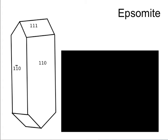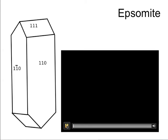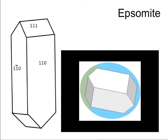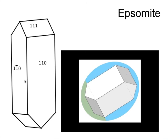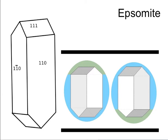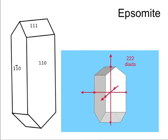Now we go to epsomite. The angle between adjacent faces is not 90 degrees. Looking at the shape, I rotate it about an axis normal to one edge and I recover exactly the same shape after 180 degrees - green was on top, green is at the bottom now. So there is a twofold rotation axis passing through that edge, and a twofold rotation axis passing through the other edge as well.